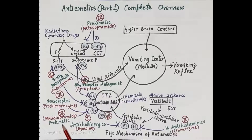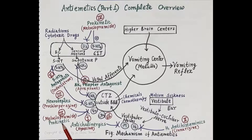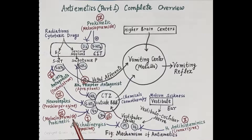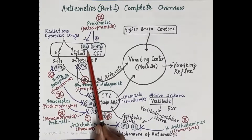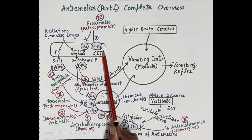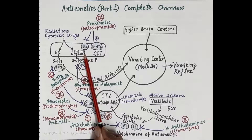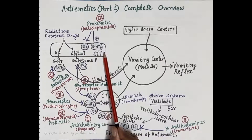The fourth category of drugs are the prokinetic agents — for example, metoclopramide. Metoclopramide exerts antiemetic effect by antagonizing D2 receptors on the chemoreceptor trigger zone. Apart from the antiemetic effect, it also speeds up gastric emptying — transportation of chyme from the stomach to the intestine — by virtue of its antagonistic effect on peripheral dopamine D2 receptors in the upper GIT. Metoclopramide also stimulates 5-HT4 receptors.